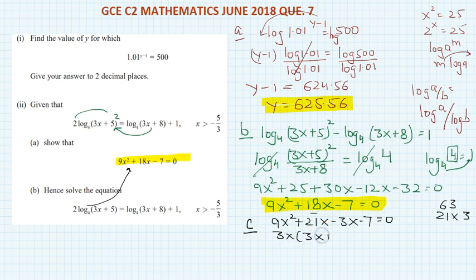So 3x is common, 3x plus 7, minus 1 is common, so 3x plus 7. That is equal to 0. So 3x minus 1 is a factor, so x is equal to 1 over 3 and minus 7 over 3.